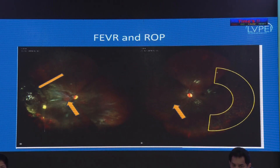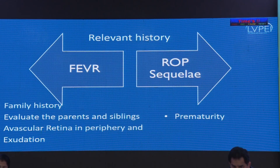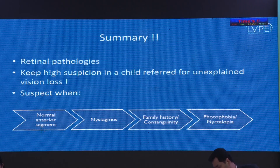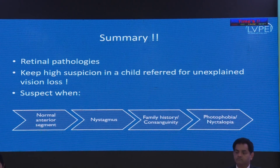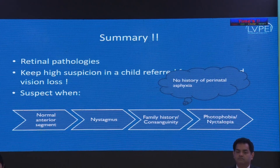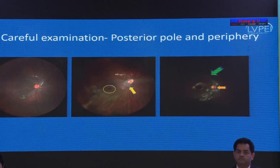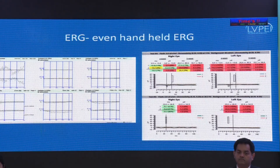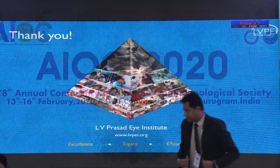Another patient demonstrated subnormal central peaks in the multifocal ERG. We also see patients with a history of ROP or prematurity — look for laser marks, as unexplained poor vision could be due to dragging of the fovea and disc, lamellar macular holes. Look for relevant history: in aphakia, look for family history; in ROP, look for history of prematurity. To summarize: keep your suspicion high for retinal pathology in a child with unexplained vision loss, especially with a normal anterior segment. Look for nystagmus, family history, consanguinity, photophobia, photo aversion, nyctalopia, and absence of perinatal asphyxia history. OCT, autofluorescence, and ERG — even handheld ERG — can clinch the diagnosis.